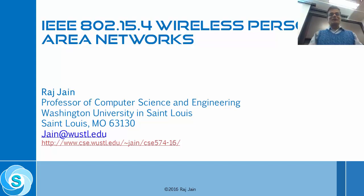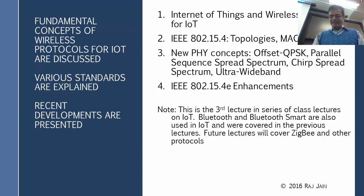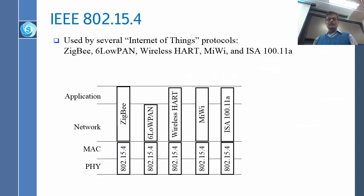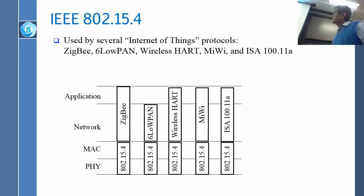Let us begin again with 802.15.4, a standard which is used in many of the other IoT protocols. The reason I am presenting 802.15.4 is because we want to talk about some of the topology issues. 15.4 is the base on which many of the standards are made. So 15.4 is used by ZigBee, is used in Six Low Pan, is used in Wireless Heart, WirelessHART, and ISA 100.11a.